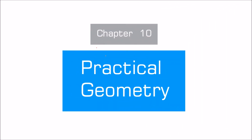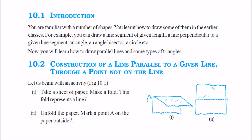We are looking at chapter number 10, Practical Geometry. We have seen a number of shapes. We know how to make a line segment, how to make a perpendicular to a line segment, how to make an angle, and how to make the angle bisector.